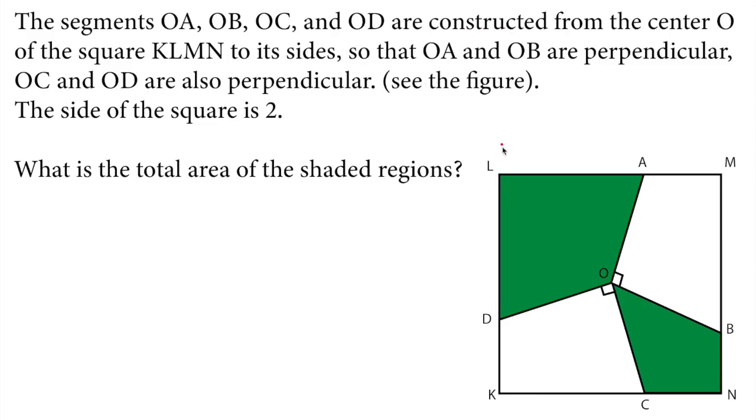Let's mark the given information. This side length is 2, and this side length is 2. The area of the square is 2 times 2 equals 4 square units.